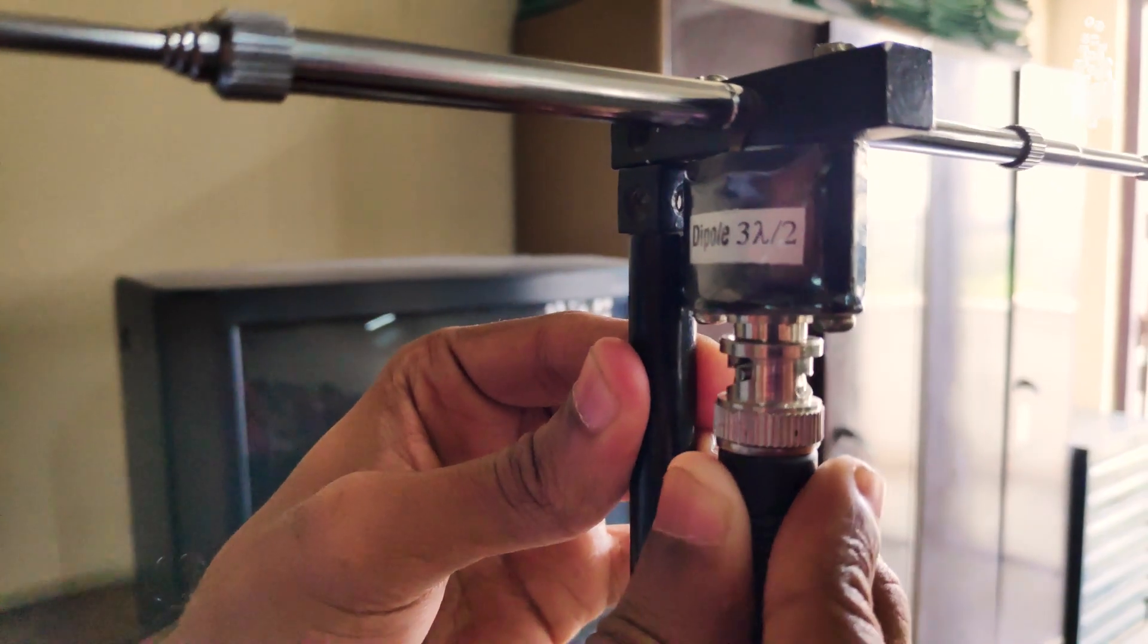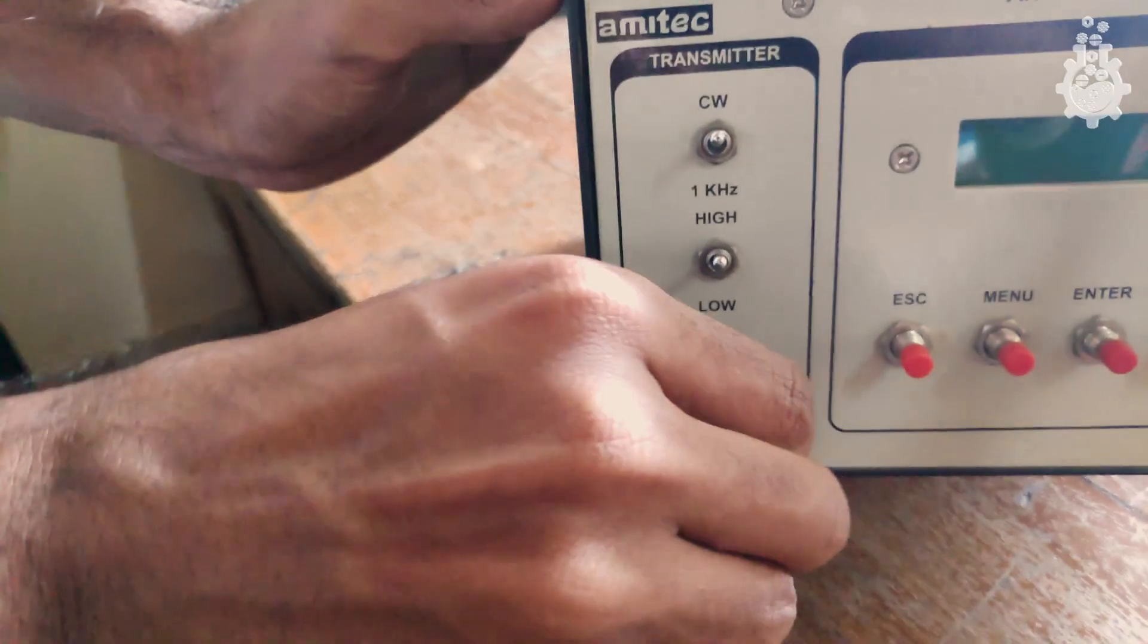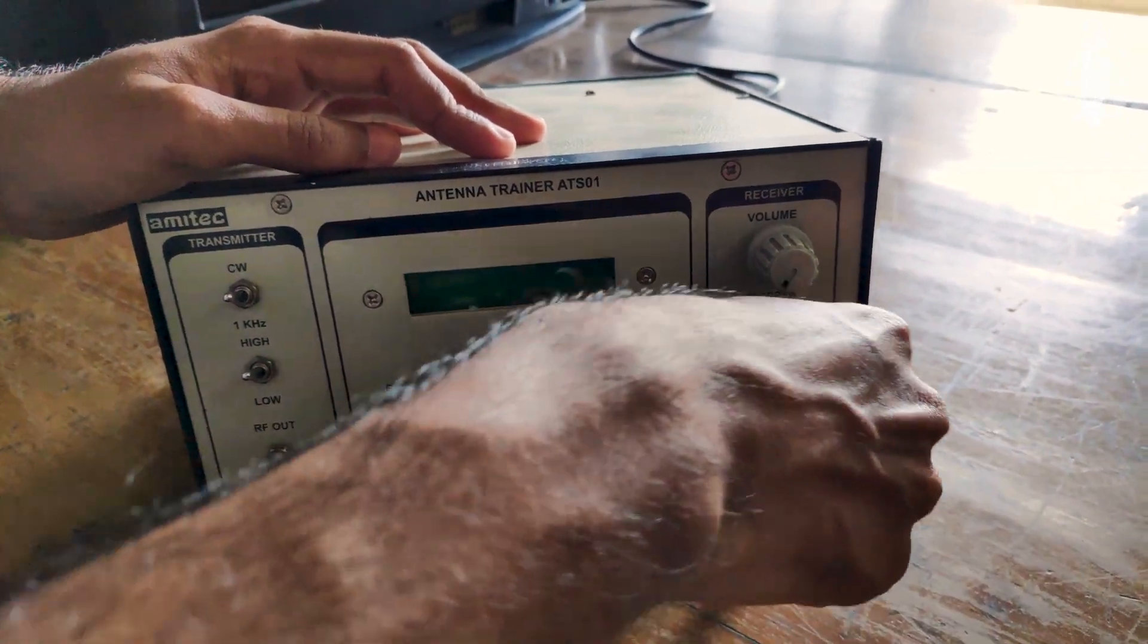Now connect one end of the BNC cable to the antenna and the other end to the antenna trainer kit. Make sure you connect the transmitter antenna to the transmitter section and the receiver antenna to the receiver section of the trainer kit.